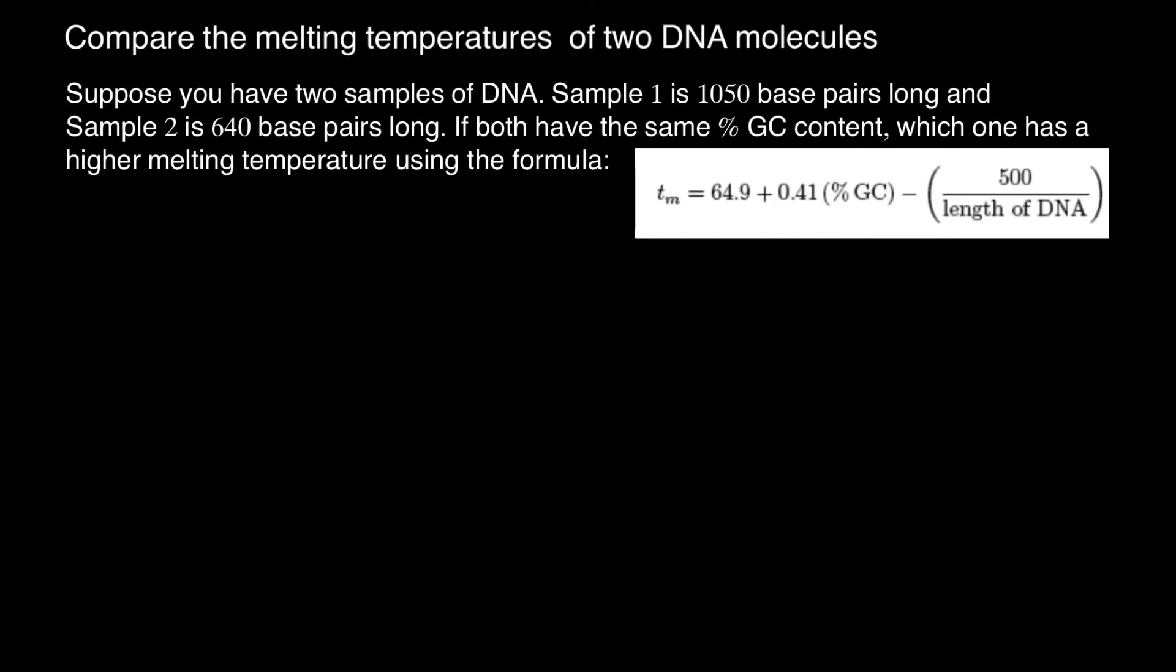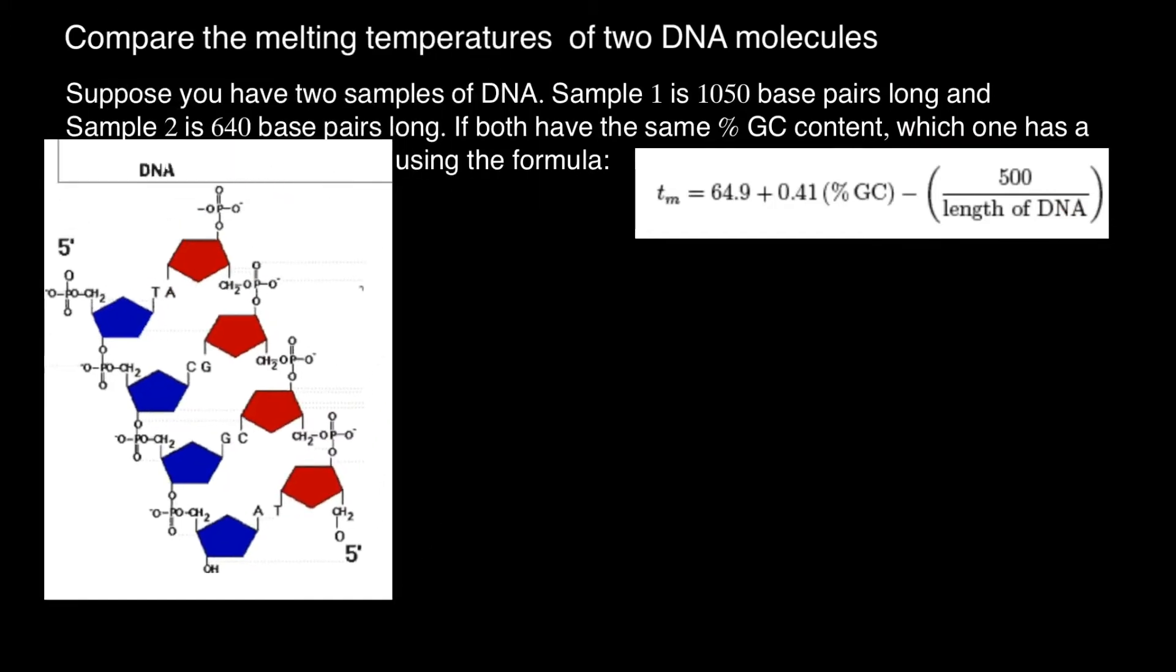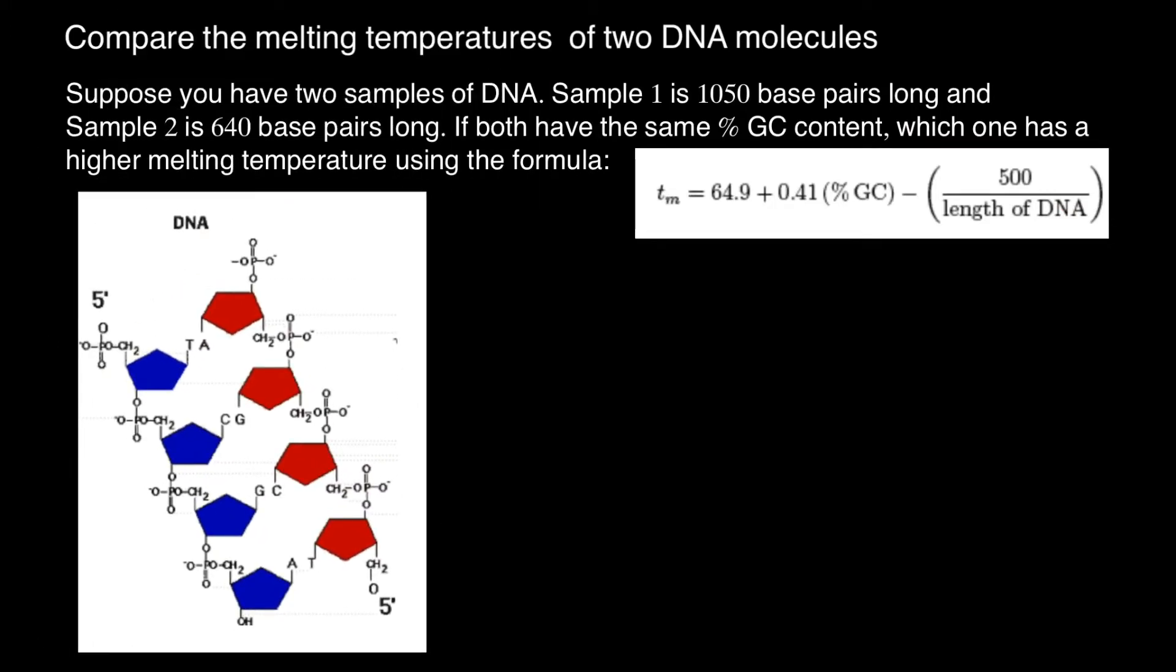First of all, let me explain some theory. Imagine that this is double-stranded DNA. And what we see here? We see bases which pair. This is cytosine base pairs with guanine, so CG, and adenine base pairs with thymine, so AT base pairs.